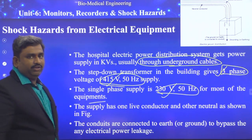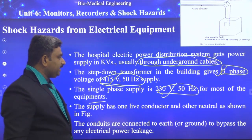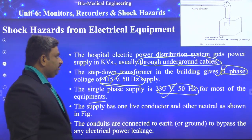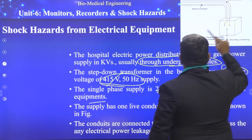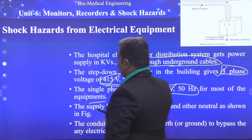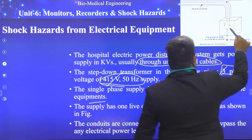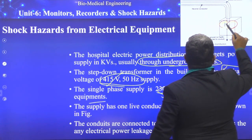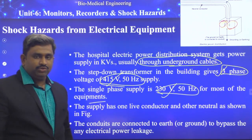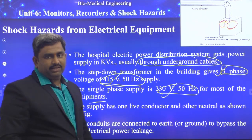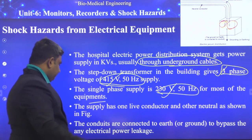The supply has one live conductor and one neutral conductor as shown in the figure. We have two types of supply conductors: the first is the line conductor and the second is the neutral conductor — that is phase and neutral in general language.